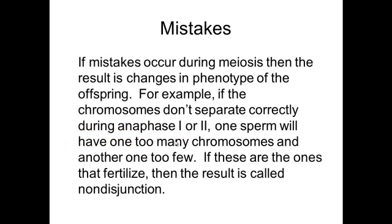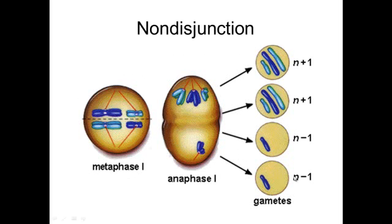Occasionally, mistakes happen. Sometimes chromosomes don't separate properly during anaphase one or anaphase two — two chromosomes may be stuck at the centromere and not pulled apart, so one sperm might have 22 or 24 chromosomes instead of 23. If that sperm fertilizes an egg, the organism will have too many or too few chromosomes. This situation is called non-disjunction, and it leads to several genetic diseases we will look at when we get into genetics.